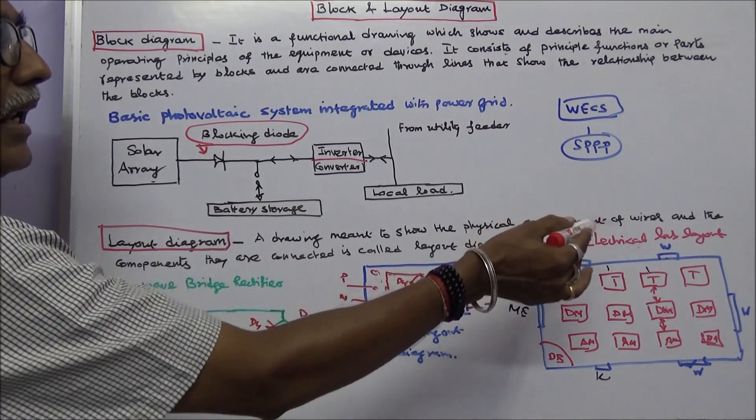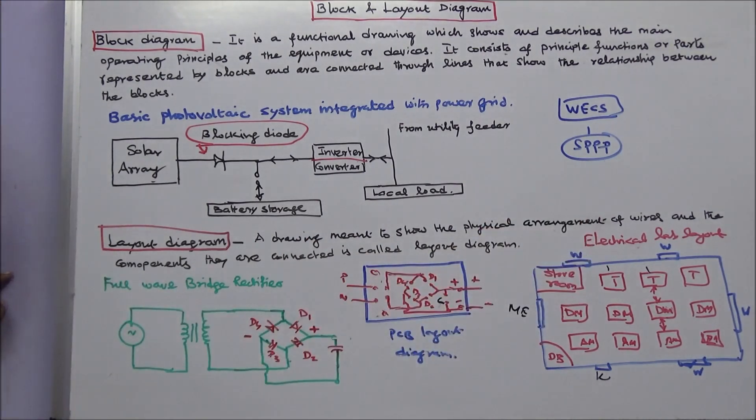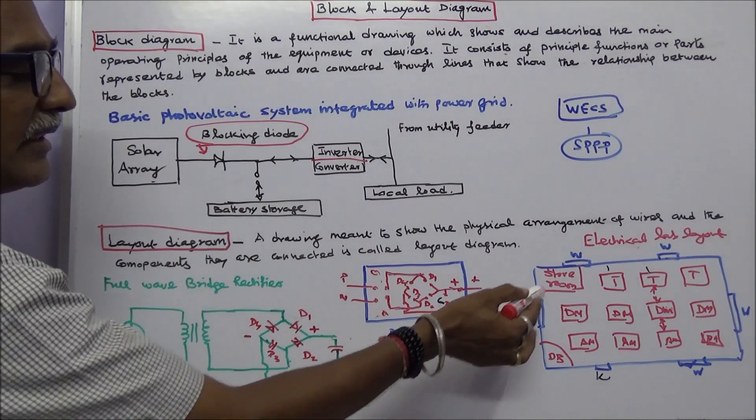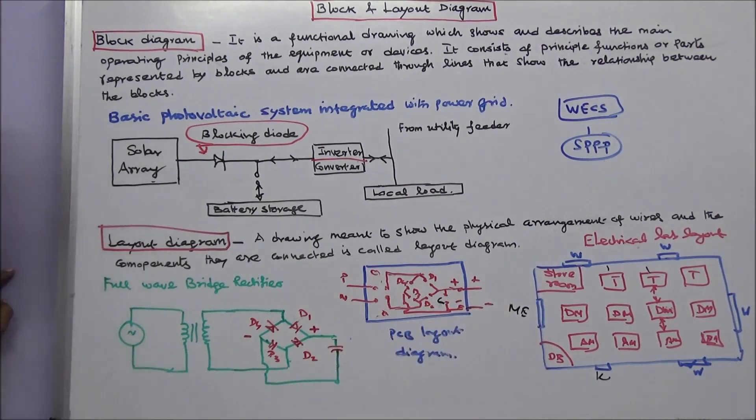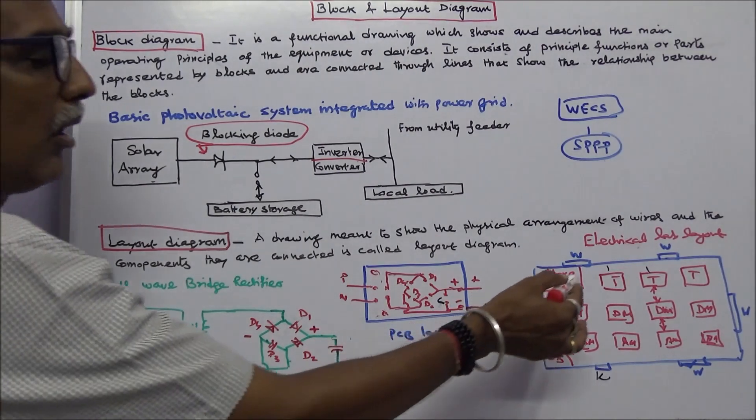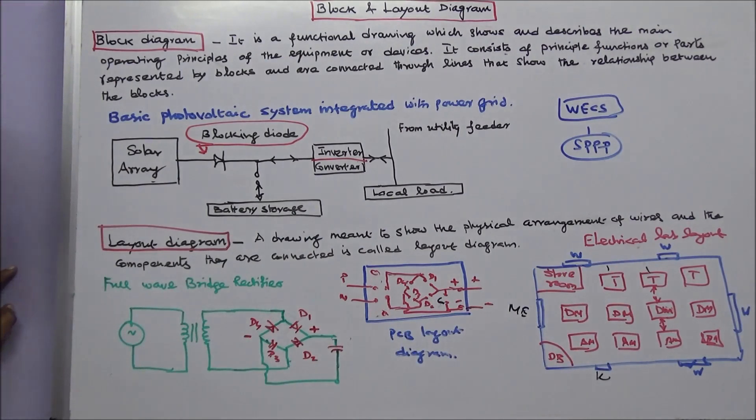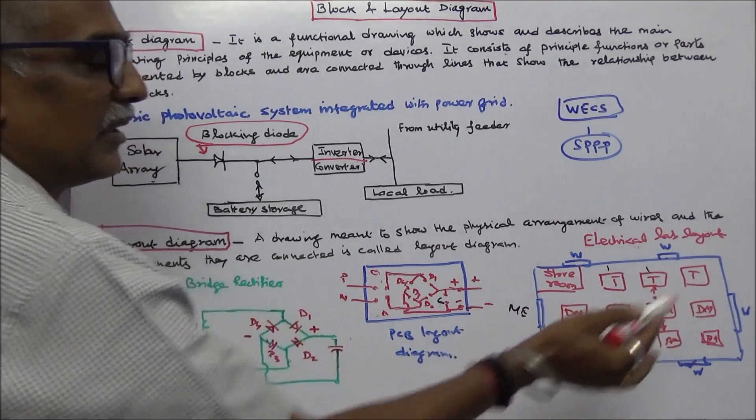This is an electrical lab layout. This is a main entrance. This is a store room. This is a distribution board. So these are all the transformers. These are all the DC machines. These are all AC machines.